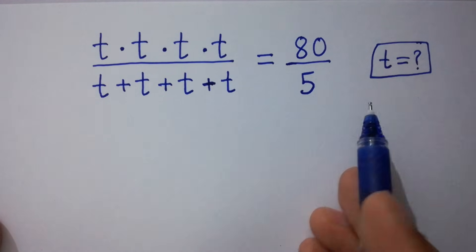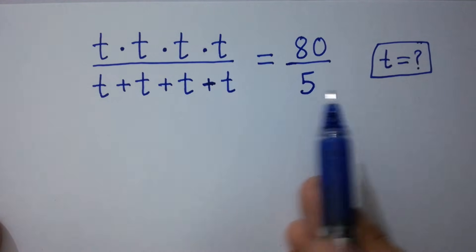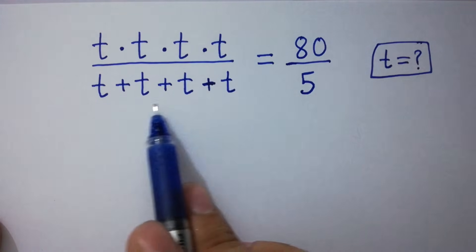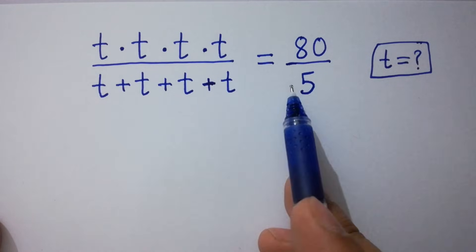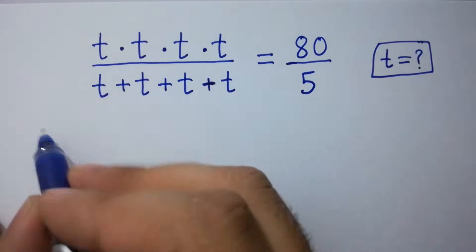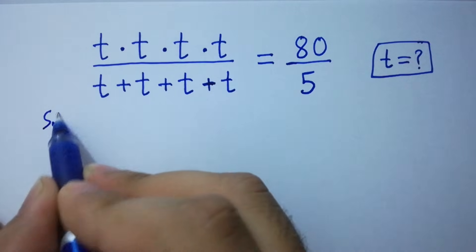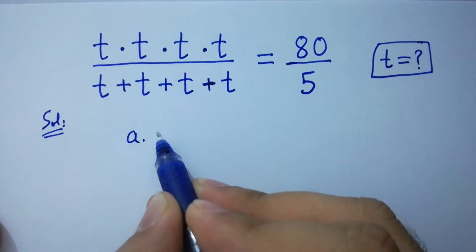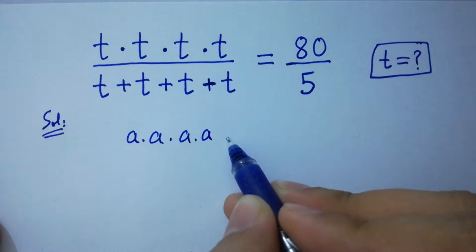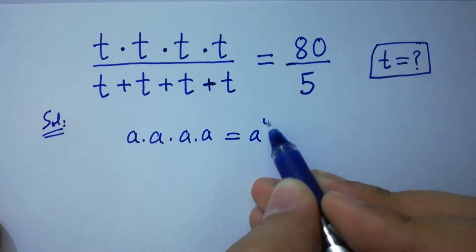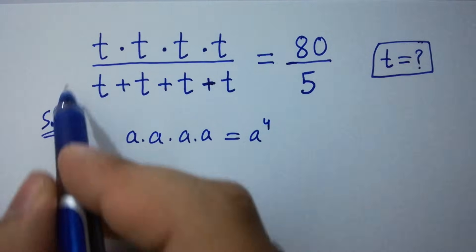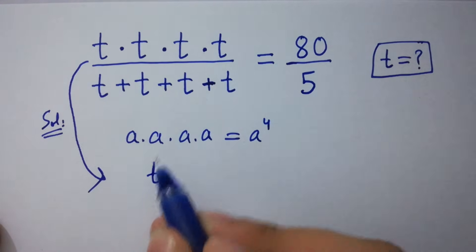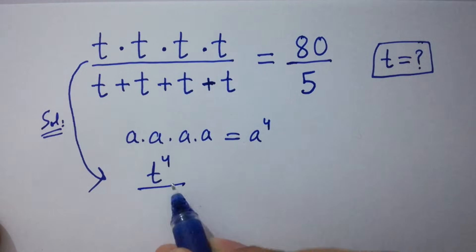Hello friends, find the value of t if t times t times t times t over t plus t plus t plus t equals 80 over 5. Let's have a solution. As we know, a times a times a times a equals a to the power 4, then it will be t to the power 4 over here.